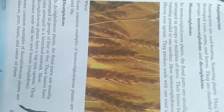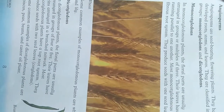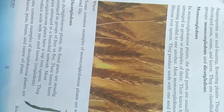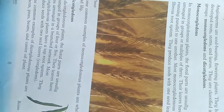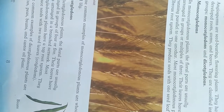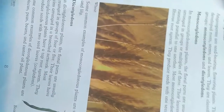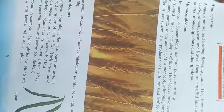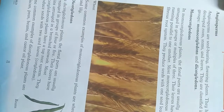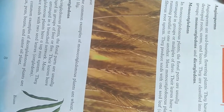In monocotyledon plants, the floral parts are usually arranged in groups and multiples of three. The leaves have veins running parallel to one another. Most monocotyledon plants have a fibrous root system.